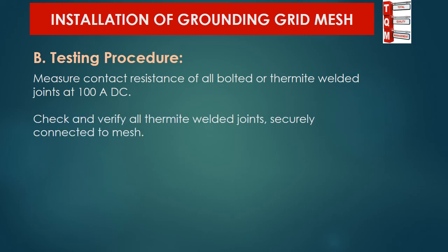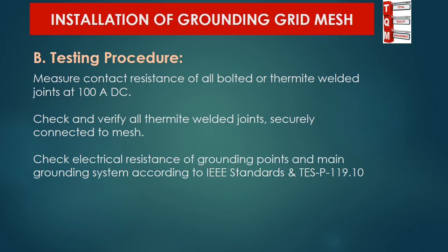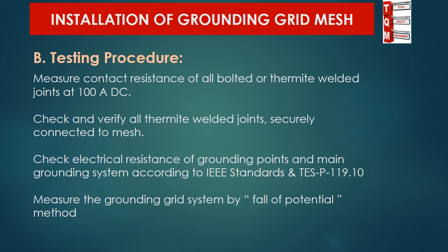Number 2: check and verify that all thermite welded joints are securely connected to the mesh. Number 3: check the electrical resistance of grounding points and the main grounding system according to IEEE standards. Number 4: measure and test the grounding grid system by the fall of potential method.